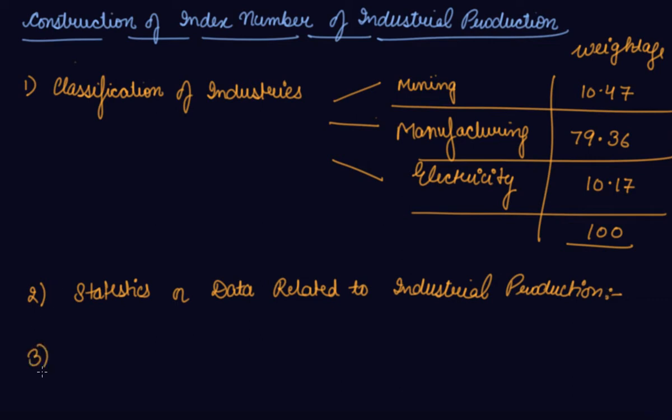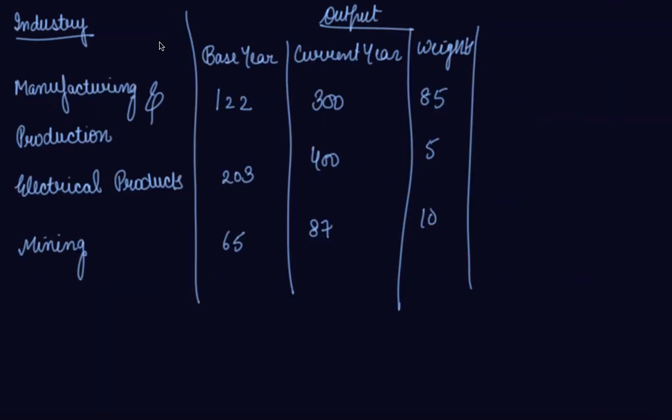And then third comes the weightage. I have told you about how the weightage is given and how the Indian industries are classified. Through this we can find out your index number of industrial production. Let's see the numerical now. This is the question. You have given the industries that are manufacturing and production, electric products and mining industry. This is the output, that is the Q0 of the base year. This is the output of the current year, that is Q1, and these are the weights.